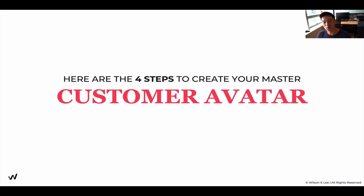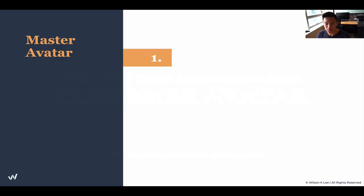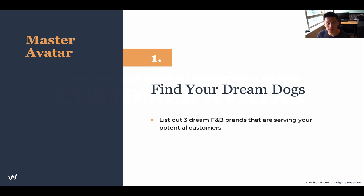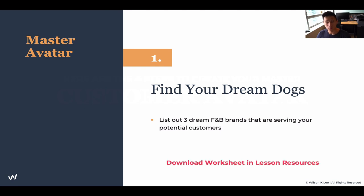Here are the four steps to create your master customer avatar. In the link below, download the worksheet and work with me. Step one: find your dream dogs. List out the three dream food and beverage brands that inspire you and are your direct competition. These are the people we're going to dissect, model, and learn from. Download the worksheet in the link below.